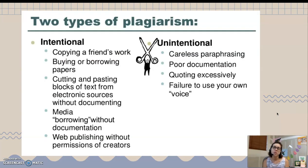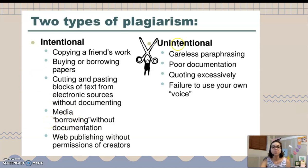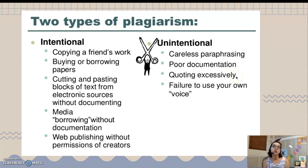There are two types of plagiarism. Intentional plagiarism includes copying a friend's work, buying or borrowing papers — yes, people have bought essays — or borrowing without documenting where you got the source from. Unintentional plagiarism could be paraphrasing but not doing it very well, or quoting excessively, meaning you're using a lot of somebody else's words instead of your own voice.